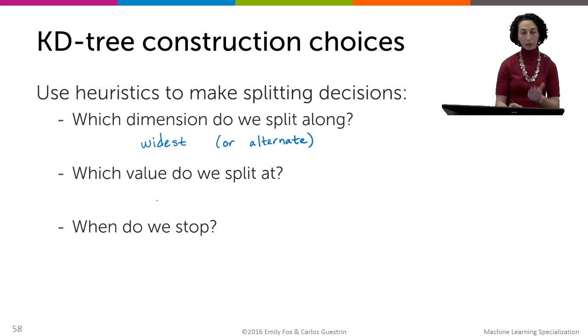Then when we think about what value we split at, one option is to split at the median value of the observations that are contained in that box. Or you could split at the center point of the box, ignoring the spread of data within the box.